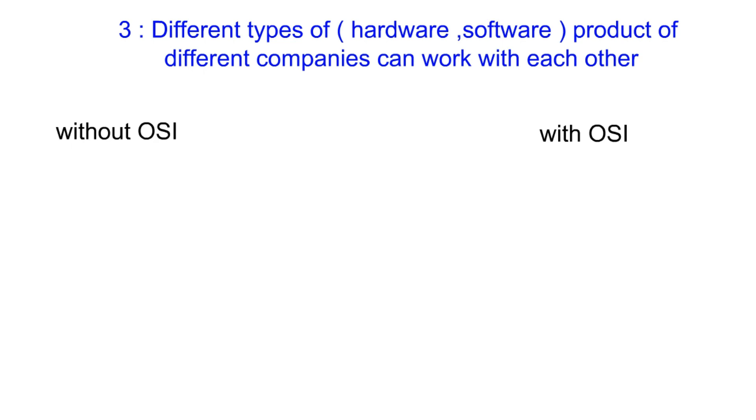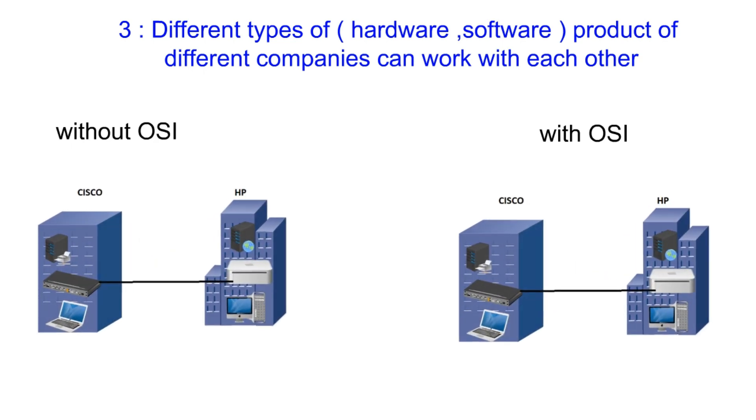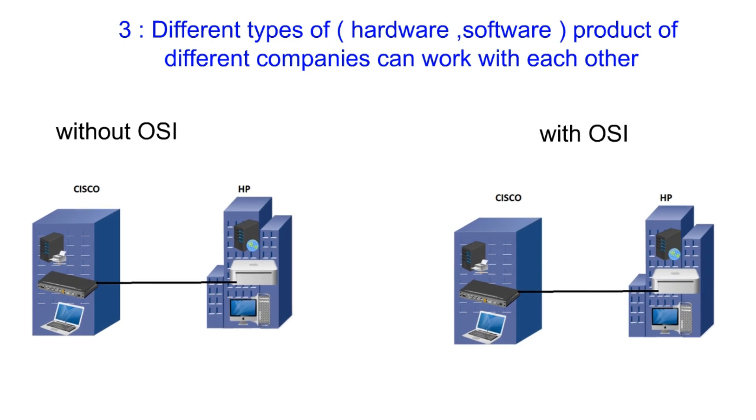Different types of hardware and software products of different companies can work with each other. Without OSI, suppose we had two companies — Cisco and HP. Both of them had different types of hardware and software devices for network communication. So if HP wanted to communicate with Cisco, because they have different hardware and software, it was difficult to make them communicate with each other. But when OSI was created, it found a compatibility between their hardware and software, so they can easily communicate with each other.